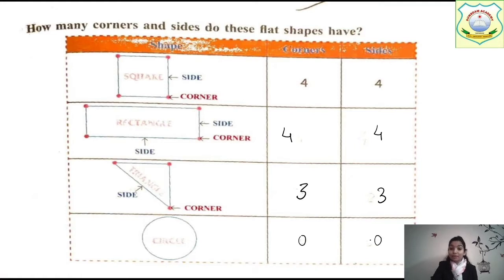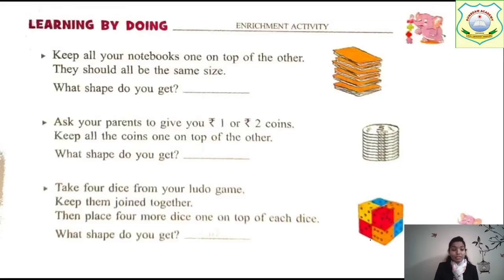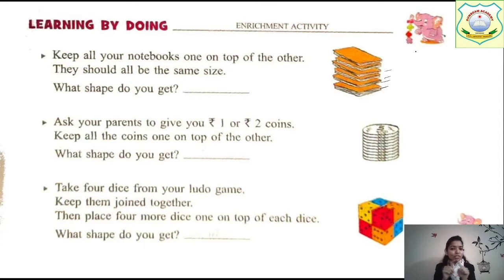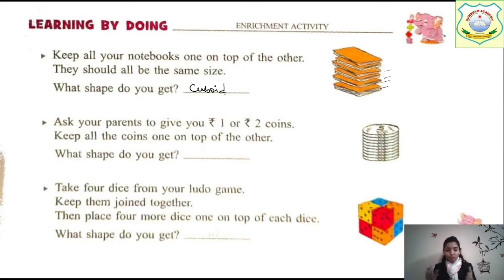Next we have learning by doing. Keep all your notebooks one on top of the other — all copies should be the same size. When you stack one on top of the other, what shape do you get? We will get a cuboid shape, because each copy is a rectangle shape and all those rectangles stacked together make a cuboid.